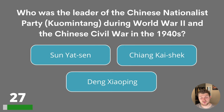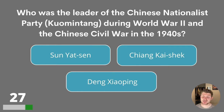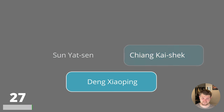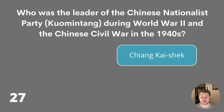Question twenty-seven. Who was the leader of the Chinese Nationalist Party during World War II and the Chinese Civil War in the 1940s? Sun Yat-sen, Chiang Kai-shek or Deng Xiaoping? The answer is Chiang Kai-shek.